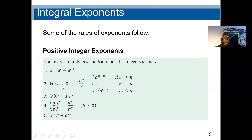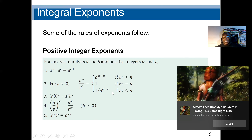We must ensure the base is not equal to 0, particularly when dividing. A to the power M divided by A to the power N — we subtract the denominator exponent from the numerator exponent, giving A to the power M minus N. If M is greater than N. If M equals N, the answer is 1. If M is less than N, we get a negative exponent, so the result is 1 over A to the power N.